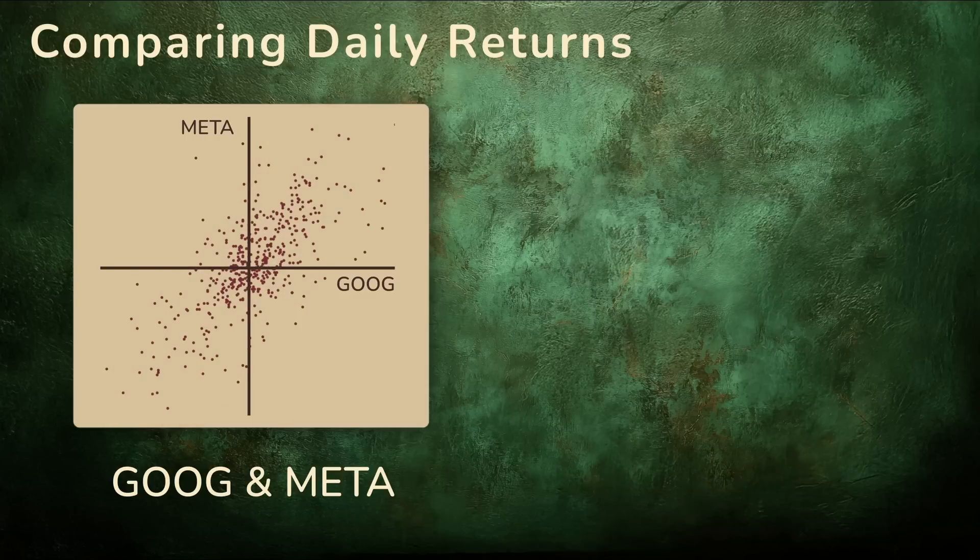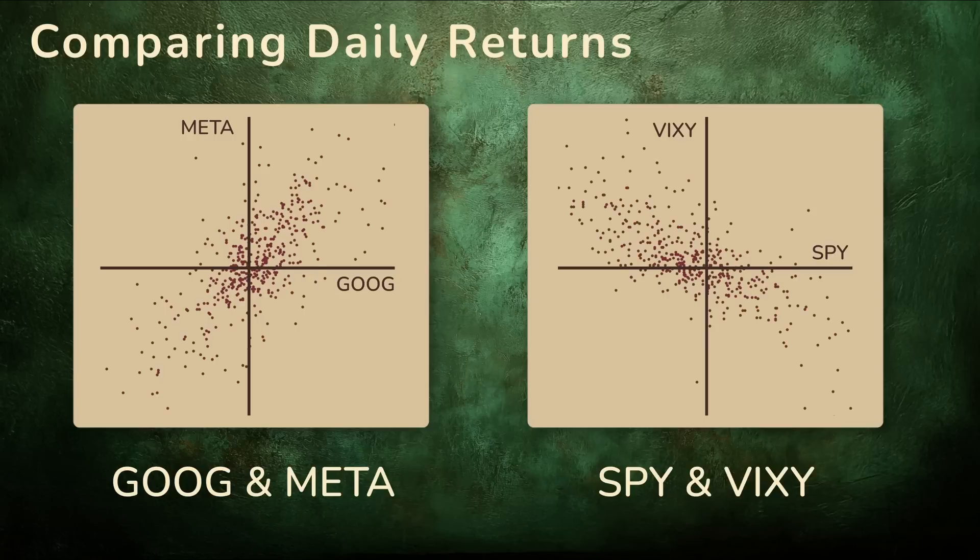Now compare that to SPY and VIXI. SPY tracks the S&P 500. VIXI tracks volatility. And it tends to rise when markets fall. When we scatter their returns against each other, the pattern flips. This time, the dots stretch from upper left to lower right. When SPY falls, VIXI rises. That's an inverse relationship.